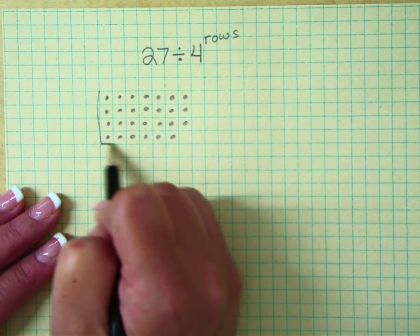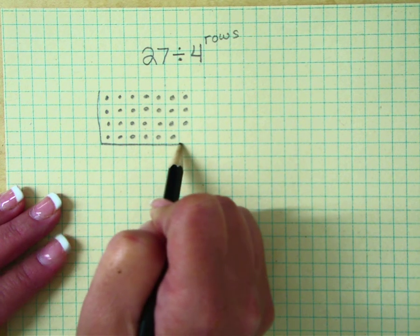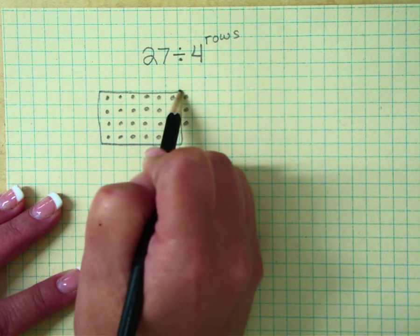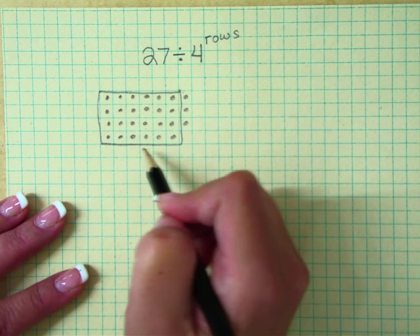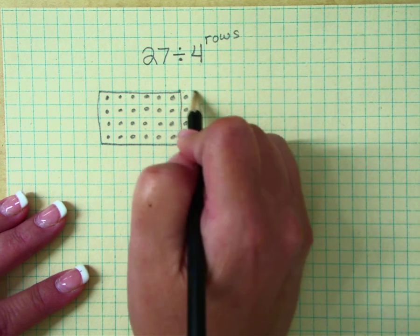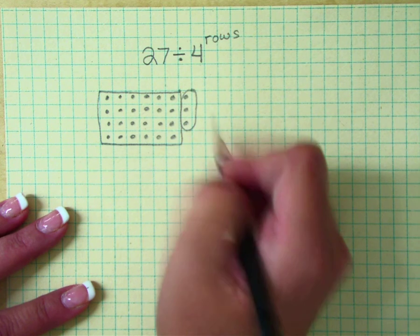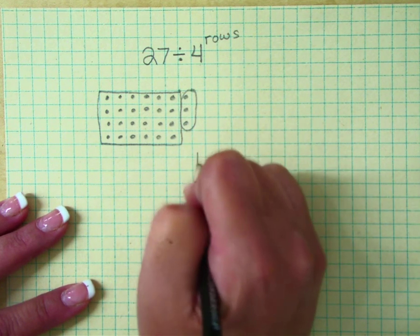Now keep in mind that a rectangle has to have four squares. So we were able to build a rectangle, but we have these three left over, so that is our remainder.